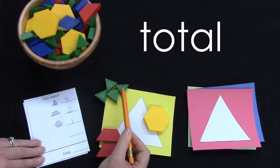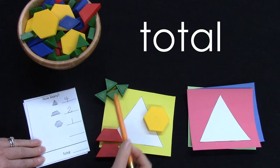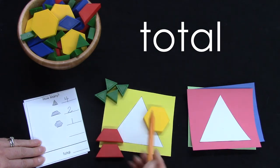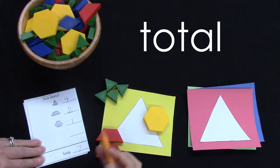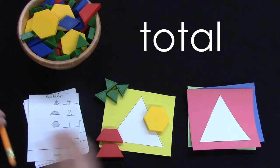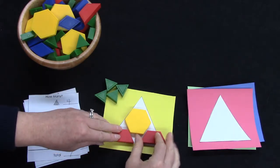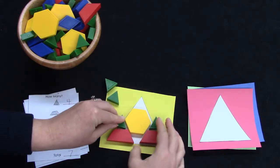I have four. One, two, three, four, five, six, seven. When I add four plus two plus one, I have seven. That is how many shapes I used for the yellow triangle.